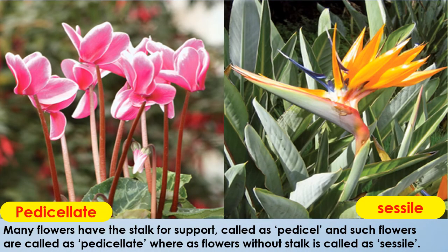Many flowers have a stalk for support called a pedicel, and such flowers are called pedicellate. Whereas flowers without a stalk are called sessile.